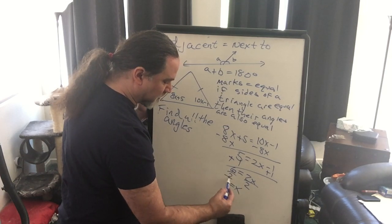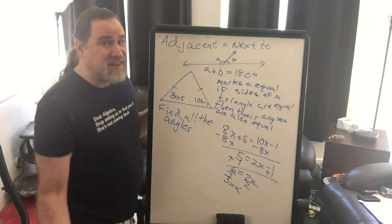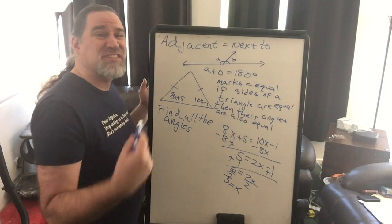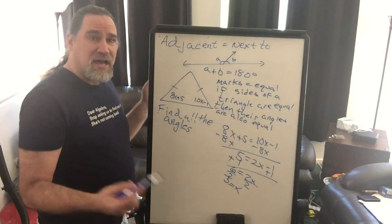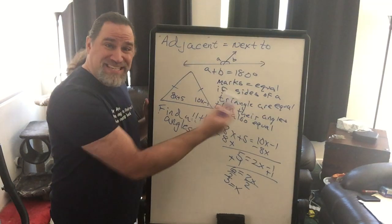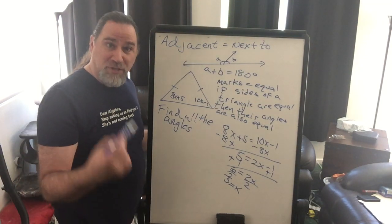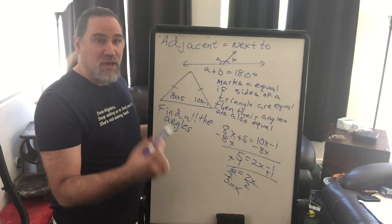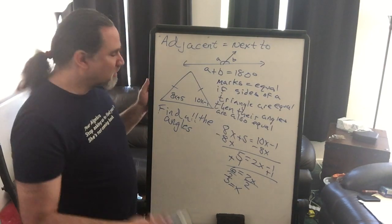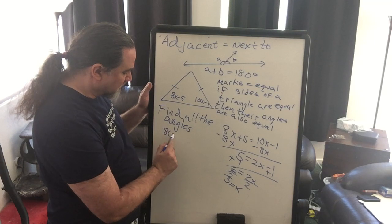X is going to equal 3. And again, 3 is not our angle. 3 is the number that's going to let us find our angle. Now we can put it into either of the two values because they're supposed to be equal. In fact, if we really wanted to be sure, we could put it into both.